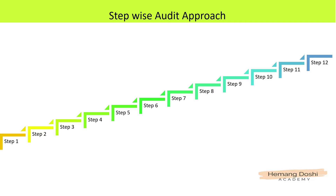For an effective and efficient audit program, we have bifurcated the information system audit process into 12 steps. For your easy understanding, we have designed an exclusive video for each of these steps. Let us now have an overview of these 12 steps for conducting the information system audit.